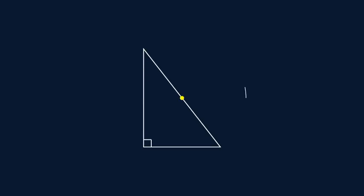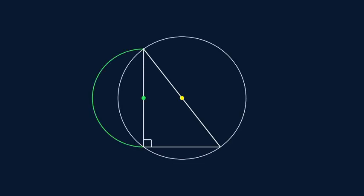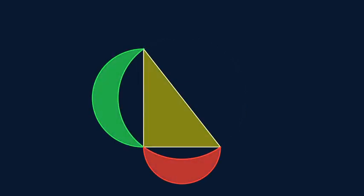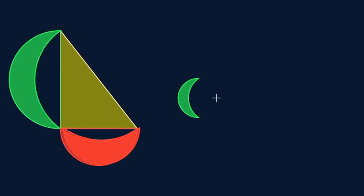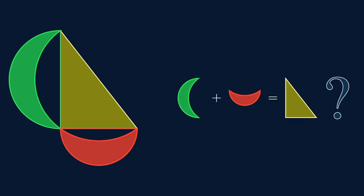This is probably the strangest theorem in geometry. Take a right triangle. Draw these red and green crescents. The sum of the areas of these crescents is somehow equal to the area of the triangle.